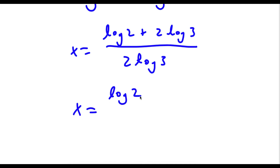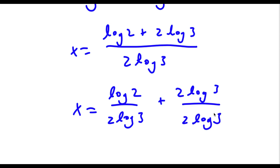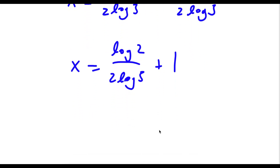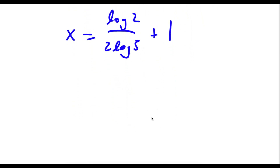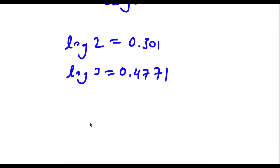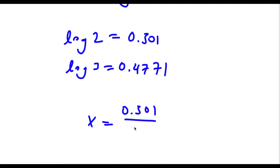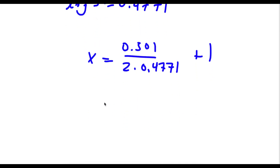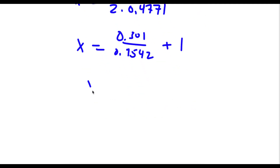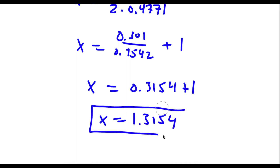Now this is the same thing as log 2 over 2 log 3 plus 2 log 3 over 2 log 3. And 2 log 3 over 2 log 3 is simply equal to 1. So I have log 2 over 2 log 3 plus 1. Now log 2 is equal to 0.301 and log 3 is equal to 0.4771. So x is equal to 0.301 over 2 times 0.4771 plus 1, which is 0.301 over 0.9542 plus 1, giving 0.3154 plus 1, which equals 1.3154. So this is our answer.